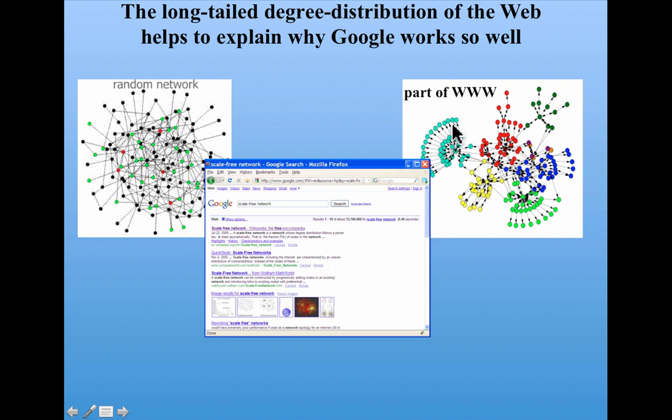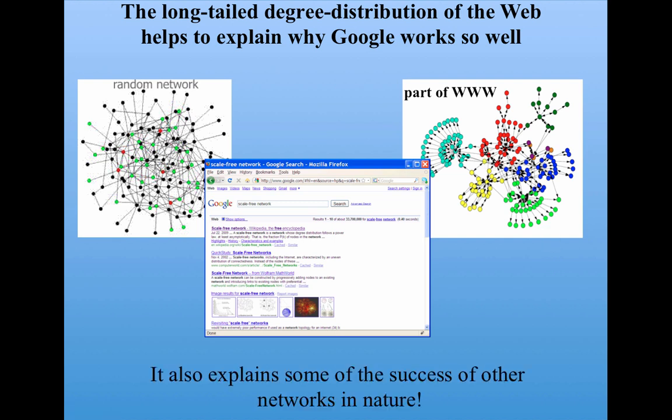Now, the web was not designed by anyone. It built itself. It self-organized. And it just happened to self-organize in this way so that it has this kind of long-tailed degree distribution and Google took advantage of that. This same notion explains some of the success of other networks in nature. The fact that they have long-tailed distributions is taken advantage of and becomes useful for organisms and social systems as well. And you can read about that in some of the suggested readings on the course materials website.